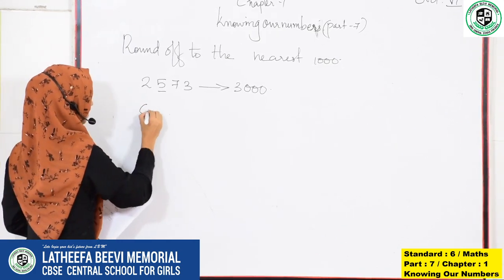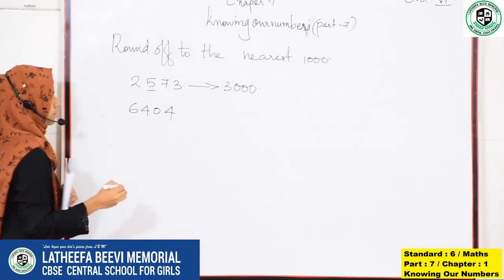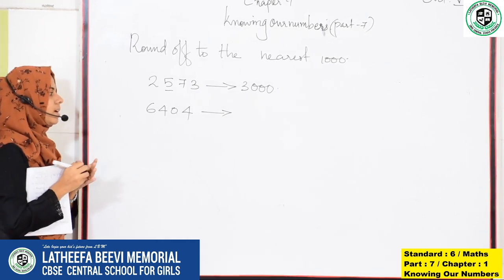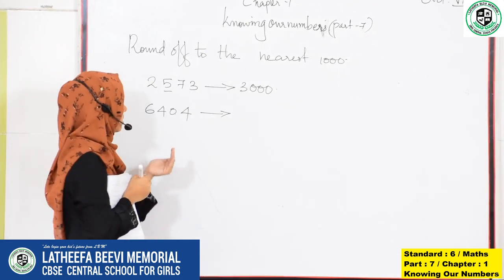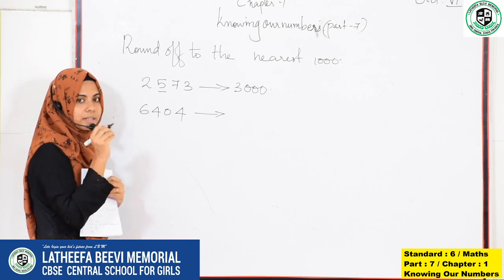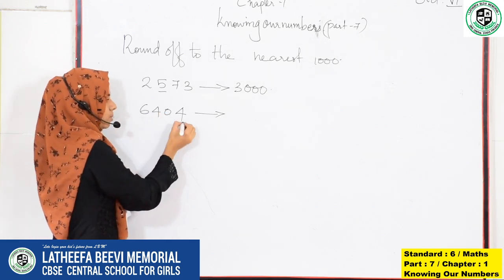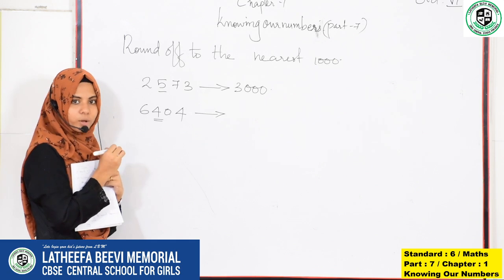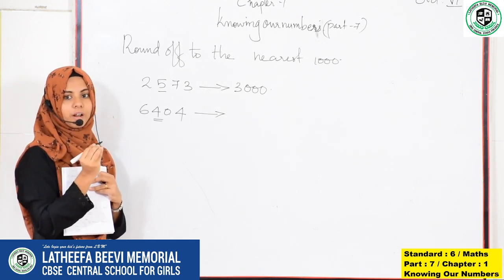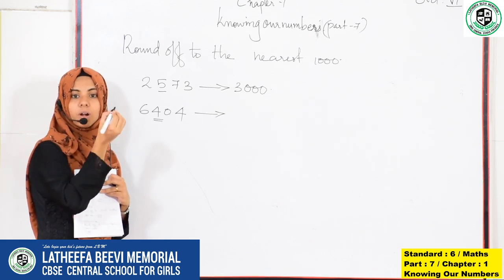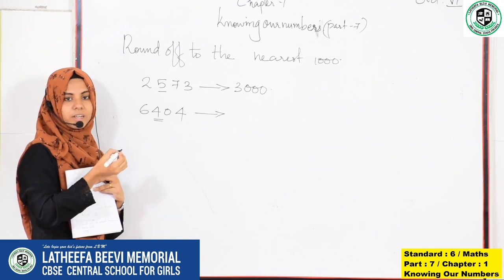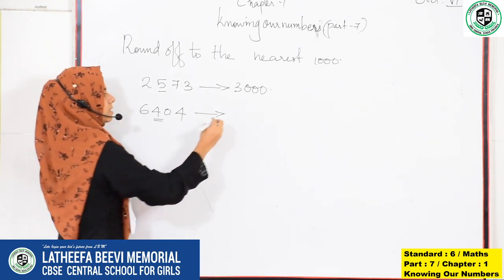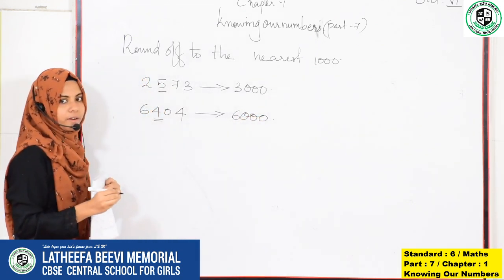One more example: 6,404. We want to check which digit is in the hundreds place. In the hundreds place here is the digit 4. We know that 4 is less than 5, so we want to round off the number to the smallest nearest thousand. 6,404 is in between 6,000 and 7,000, so we round off to 6,000.